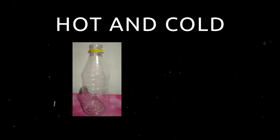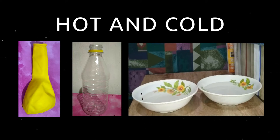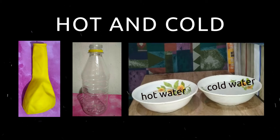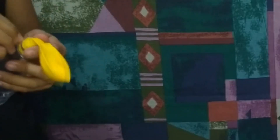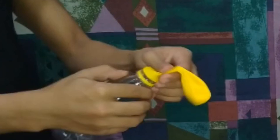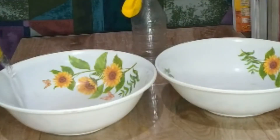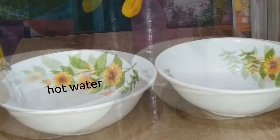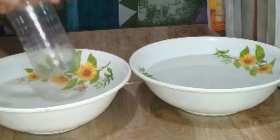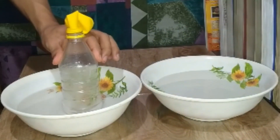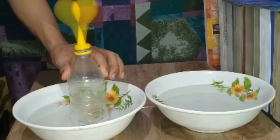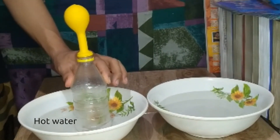The next activity is called Hot and Cold. Here, we also need a clean plastic bottle, a balloon, a bowl, hot water, and cold water. Please follow the procedure properly. Put the balloon on the bottle mouth. Stretch the tip of the balloon such that it covers the mouth of the plastic bottle. Prepare two bowls — fill the first bowl with hot water and the second bowl with cold water. Put the bottle with balloon in the bowl with hot water and let it stay there for about 1 to 3 minutes.